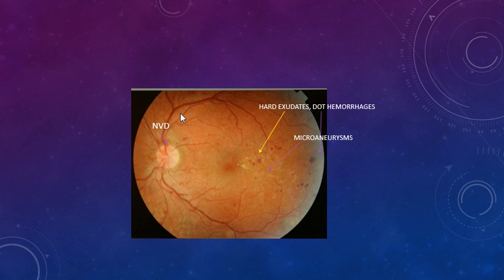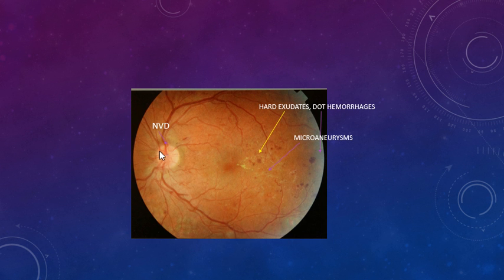This is an image of the left eye — you can see the optic disc on the left side. If you look very carefully, you can see some fine blood vessels on the optic disc; these are new vessels at the disc, known as NVD. The most common reasons for NVD are either proliferative diabetic retinopathy or retinal vein occlusions leading to new vessel formation.